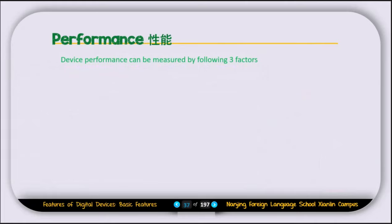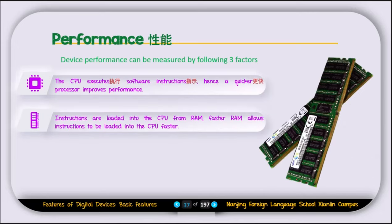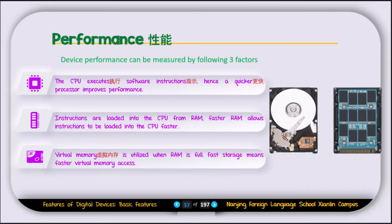The performance of the device can be measured by three factors: CPU, RAM, and storage. The CPU executes software instructions, so a quicker processor improves performance. Instructions are loaded into the CPU from RAM, so faster RAM allows instructions to be loaded faster. Third is virtual memory, which is utilized when RAM is full — fast storage means faster virtual memory access. These are the three main factors that influence device performance.